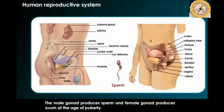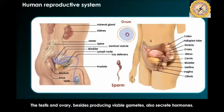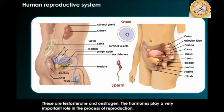The male gonads, known as the testes, produce sperms, and the female gonads — the ovaries — produce the ovum. The testes and ovaries, besides producing living gametes, also secrete their respective hormones: testosterone and estrogen. These hormones play a very important role in the process of reproduction.